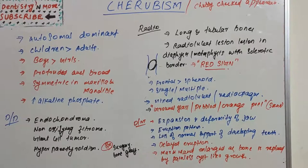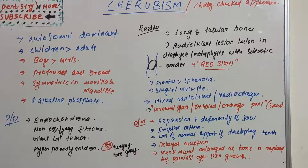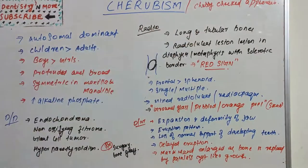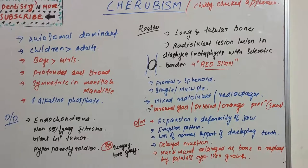The maxilla and mandible are enlarged as the bone is replaced by painless cyst-like growths. The bone will be resorbed and there will be a symmetrical expansion of the maxilla and mandible. That is why this condition has been given the peculiar name — the person has a chubby cheek appearance, like a baby's very broad cheeks.